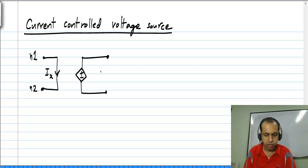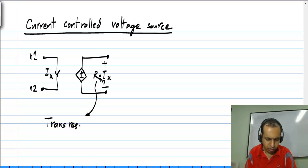Let us say the current is Ix, then the voltage across these two terminals is given by R times Ix. This proportionality constant, let me denote this by Rm, is many times called the transresistance.